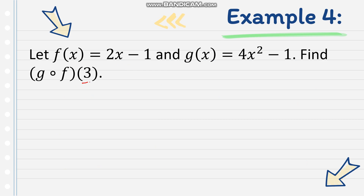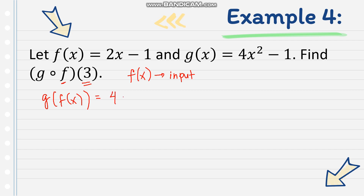We still have the value of x, which is 3, so after composition we'll need to evaluate. Looking at the given, f of x is our input. So g of f of x: we evaluate g of x with f of x. G of x is 4x squared minus 1, so we replace x with f of x, which is 2x minus 1: g of f of x equals 4 times (2x minus 1) squared minus 1.